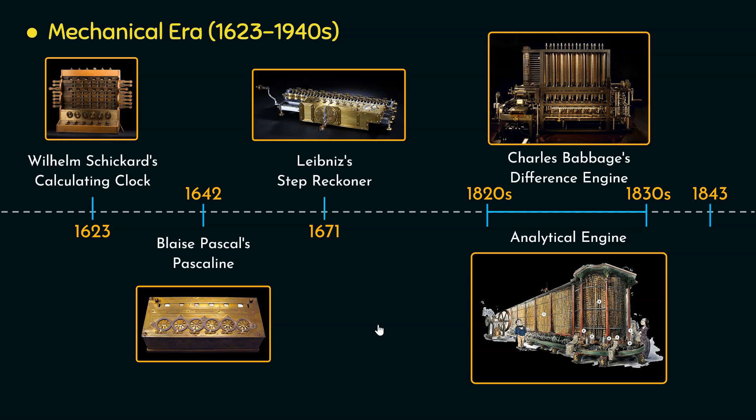However, some of the notable contributions during that period were Herman Hollerith's tabulating machine, which was used to process and analyze data for the United States census. Later his company became a part of the company we know today as IBM. Also during that period, the punch card technology was invented, and the most notable contribution was Alan Turing's paper on computable numbers, which introduced the concept of a theoretical computing machine known as the Turing machine, which laid the theoretical foundation for the concept of a general purpose computer. So that was the revision of the mechanical era.